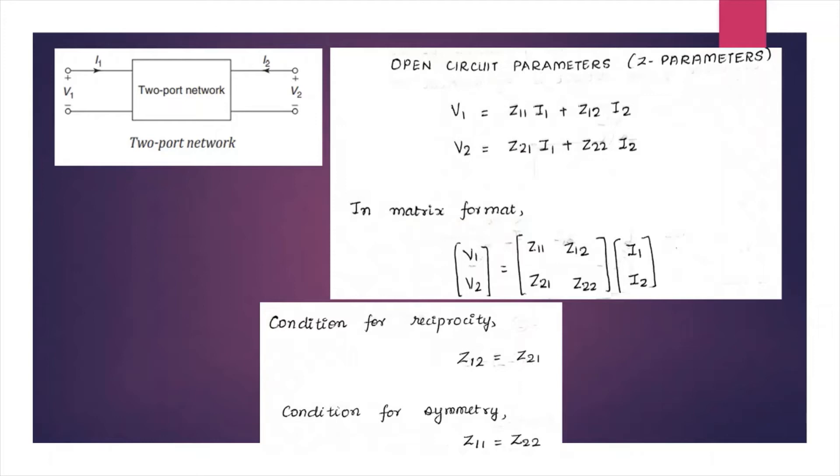And also the condition for reciprocity is that Z12 must be equal to Z21, and the network, if it has to be symmetrical, the condition is that Z11 must be equal to Z22.